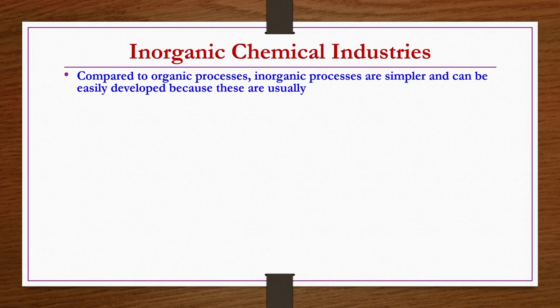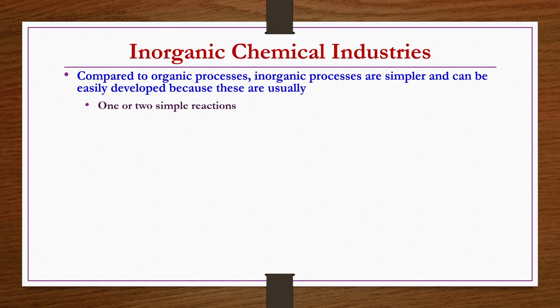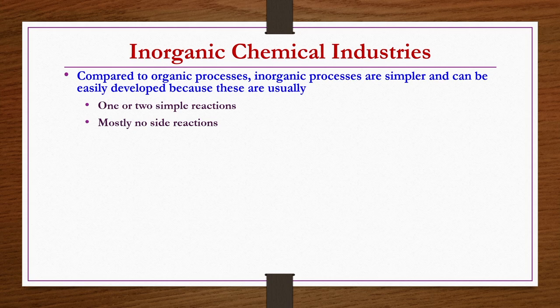From today's lecture onwards, we are going to discuss the production of different types of inorganic chemicals. Before going into the sulphur industry details, we have a few comparisons of inorganic chemical technology against organic chemical technology. Compared to organic processes, inorganic processes are simpler and can be easily developed because these are usually one or two single-step reactions.